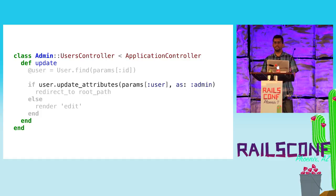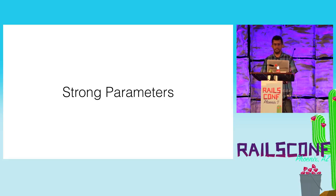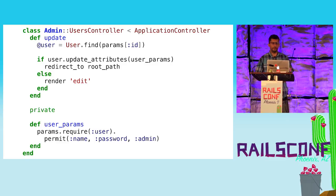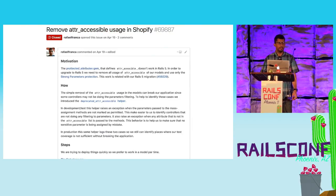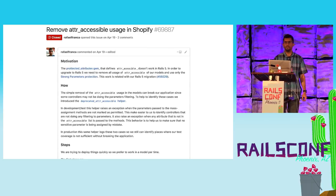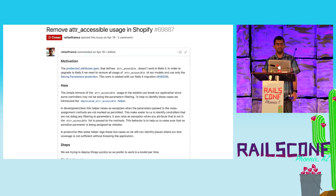That was in Rails 3.2. In Rails 4, we changed the way this protection works with strong parameters. It brings the protection closer to the source of the input — the controller — so it's easier to remember to protect your data before sending it to the model. We started a huge task to remove all the attr_accessible usage in Shopify because Rails 5 would not support it anymore. We had more than 150 pull requests and three months of work to remove this feature.